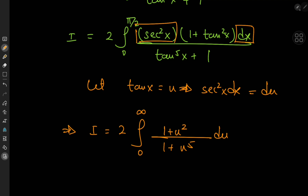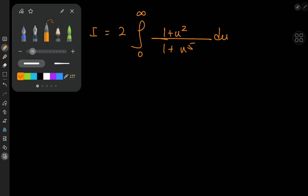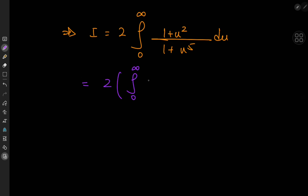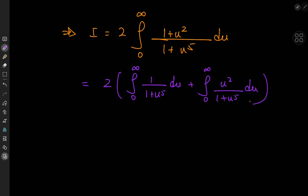Now would be a good time to introduce the beta function. Using linearity again, write this as twice the integral from 0 to infinity of 1 divided by 1 plus u to the fifth power du, plus the integral from 0 to infinity of u squared divided by 1 plus u to the fifth power du.